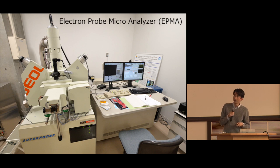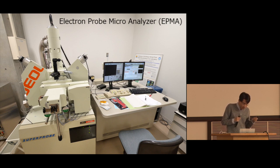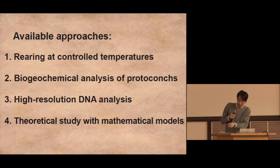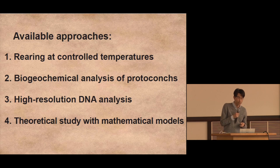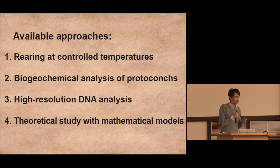An example of hardware is EPMA. Using this machine, we can quantify the elemental composition of the shells constructed by planktonic larvae, and this information potentially makes it possible to estimate the temperature experienced by the larvae. Needless to say, DNA sequencing techniques continue to achieve significant progress over the past several decades. I believe that genetic information is necessary to get a comprehensive understanding about larval migration across latitudes.